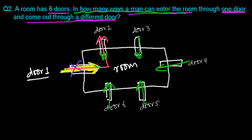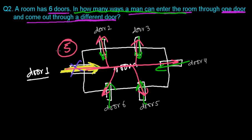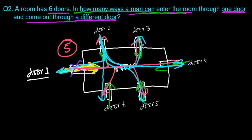He may go out from door two, door three, door four, door five, or door six — five options. Similarly, if he enters from door two, he cannot exit through door two, so he has five exit options again: door one, door three, door four, door five, or door six. No matter which door he enters from, he always has exactly five options to go outside.